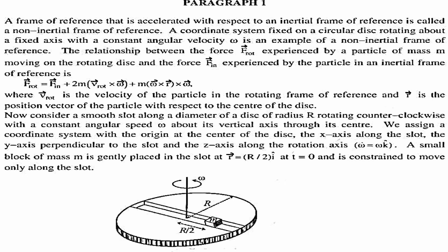In this problem we have a rotating disk and a particle on it. They describe a coordinate system fixed to the rotating disk: along the slot we have the positive x-axis, positive z-axis as shown, and using a right-handed coordinate system, positive y-direction follows. The position vector from the origin to the particle is R/2 times i-cap at t=0, and the particle starts moving along the positive x-axis with velocity v_rotational.